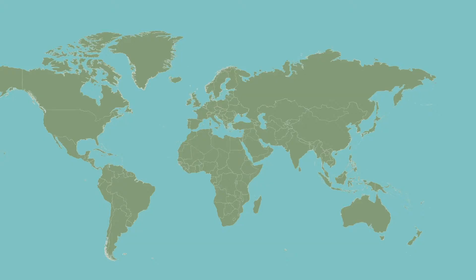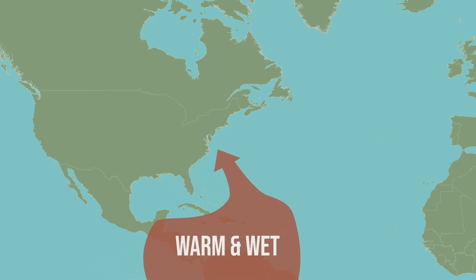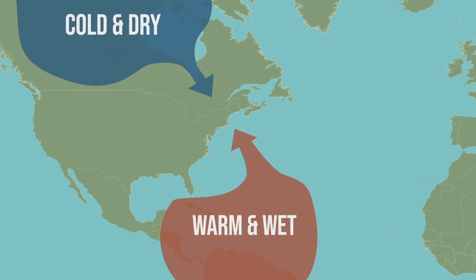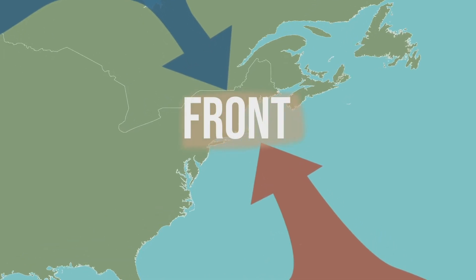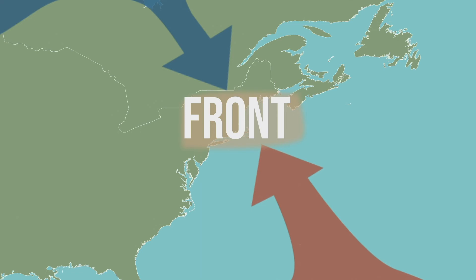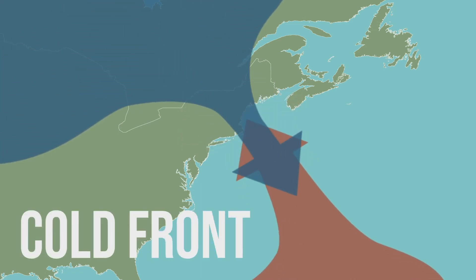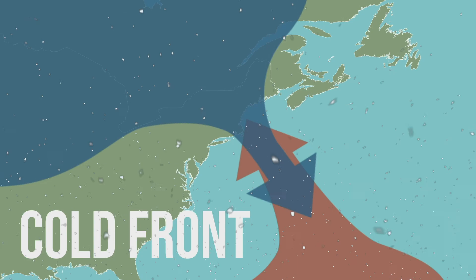Bad weather often occurs when two air masses collide. Here we have a warm and wet air mass coming from the Gulf of Mexico, and a cold and dry air mass coming from Canada. Where these two air masses meet, we call that a front. There are a couple different types of fronts. One type is called a cold front — that's when the cold air moves and takes over the warm air. When there's a cold front, we get snow. And that's it. Have a good day!